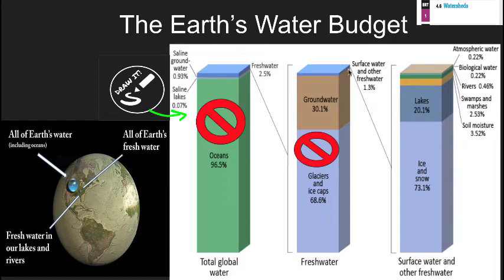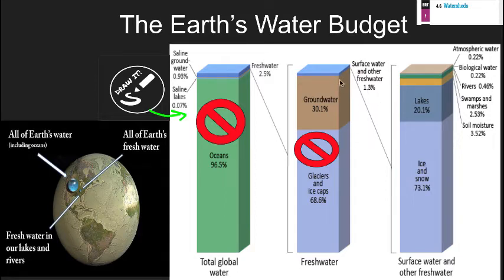We can use the groundwater portion and then surface water like lakes, rivers, and streams. Taking that surface water percent, we have about 1.3% left over. We can blow that up, and some of that surface is ice and snow, lakes, and atmospheric water — so even all of this is not super accessible. We do rely very heavily on lakes, rivers, streams, surface water, and groundwater for our water supply.